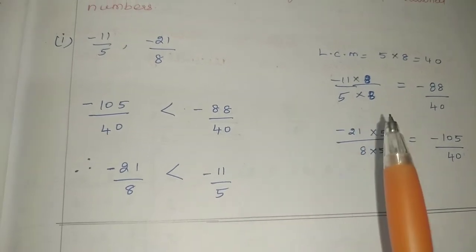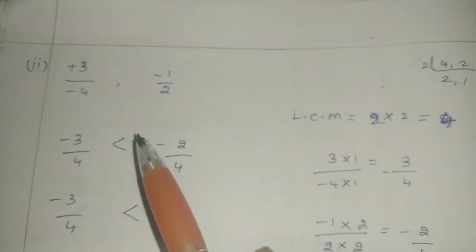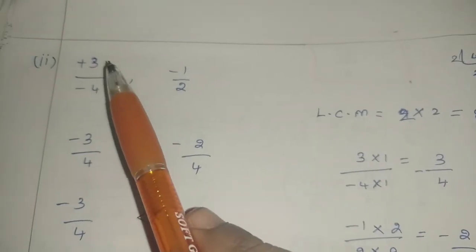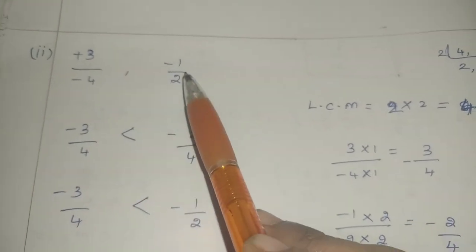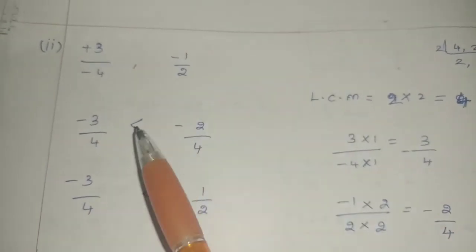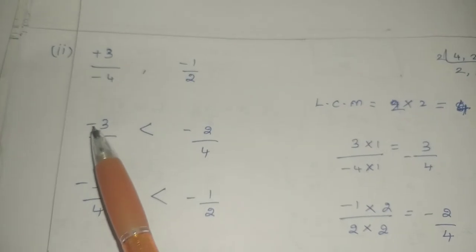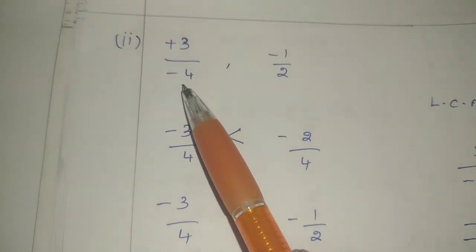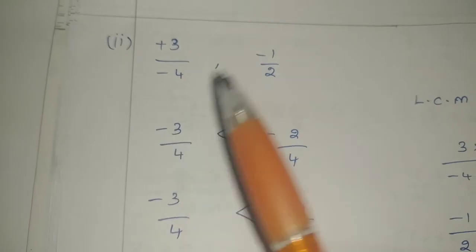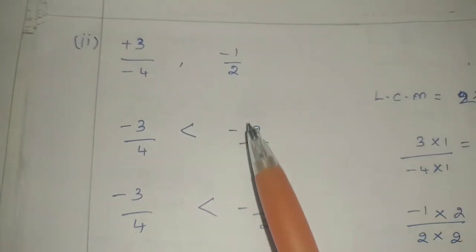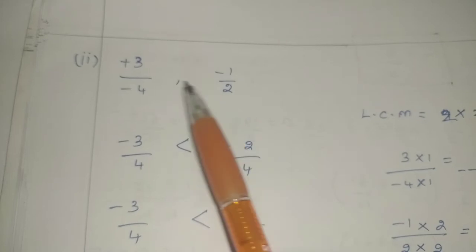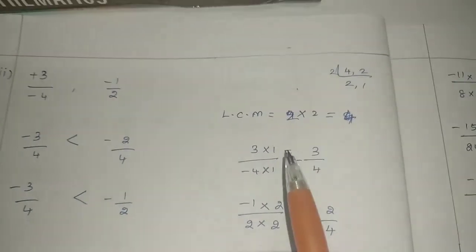The second comparison sum: 3 by minus 4 and minus 1 by 2. First step, we look at the denominators: 4 and 2 are different. We take LCM of 4 and 2.